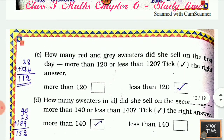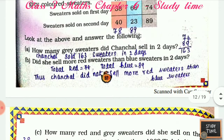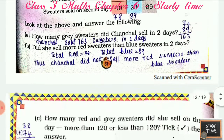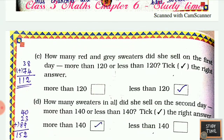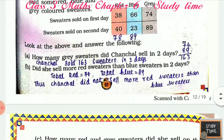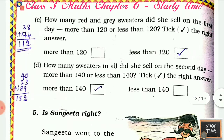How many red and gray sweaters did she sell on the first day — is it more than 120 or less than 120? Red and gray: 38 plus 74 is 112, so it is less than 120. How many sweaters in all did she sell on the second day? If you add 40 plus 23 plus 89 you get 152, so it is more than 140.